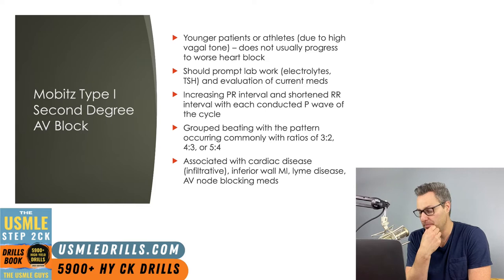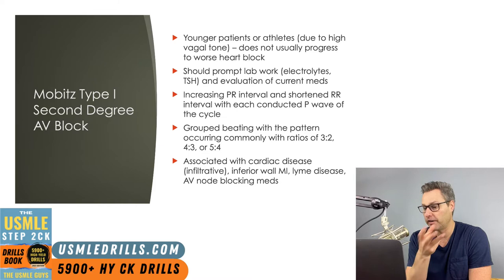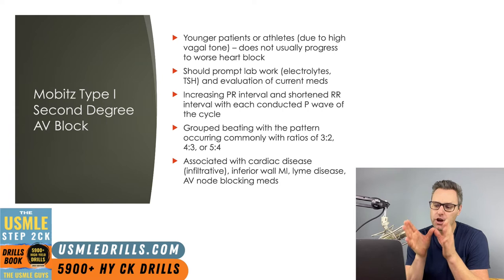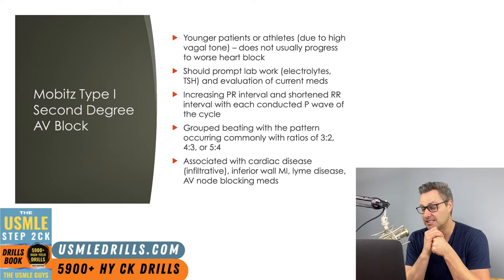Mobitz Type 1 can be seen in younger patients and athletes due to higher vagal tone, and these individuals typically don't progress to a more serious form of heart block. The right coronary artery supplies the AV node, so Mobitz Type 1 can be a complication of an inferior wall MI. On ECG, the RR interval decreases with each conducted P wave, and the main finding is the increasing PR interval until a non-conducted P wave occurs, with grouped beating at ratios of 3:2, 4:3, or 5:4.